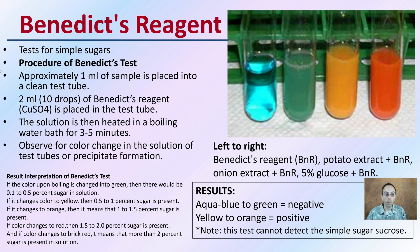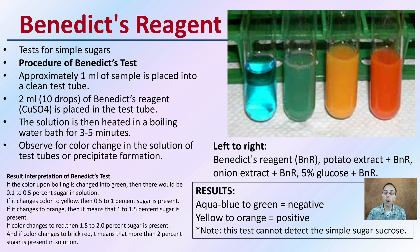Then we have Benedict's reagent, which tests for simple sugars. Benedict's reagent requires the solution to be mixed and then heated in a boiling water bath for about three to five minutes. After that time, observe any color change: an aqua blue to green coloration is a negative test, while yellow to orange indicates a positive test. Note that this test cannot detect the simple sugar sucrose, so be mindful of that limitation.